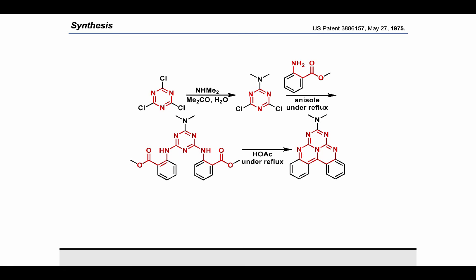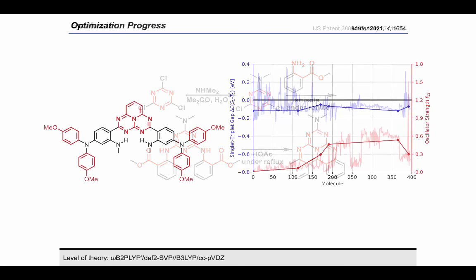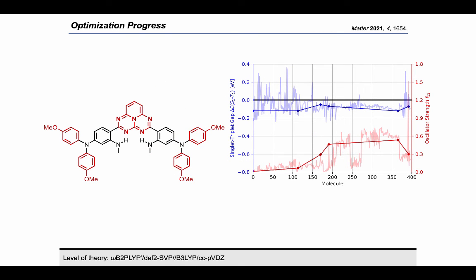Hence, we moved to a different core structure but followed the same general type of substitution pattern to find alternative candidates with somewhat worse, but still acceptable, property trade-offs.